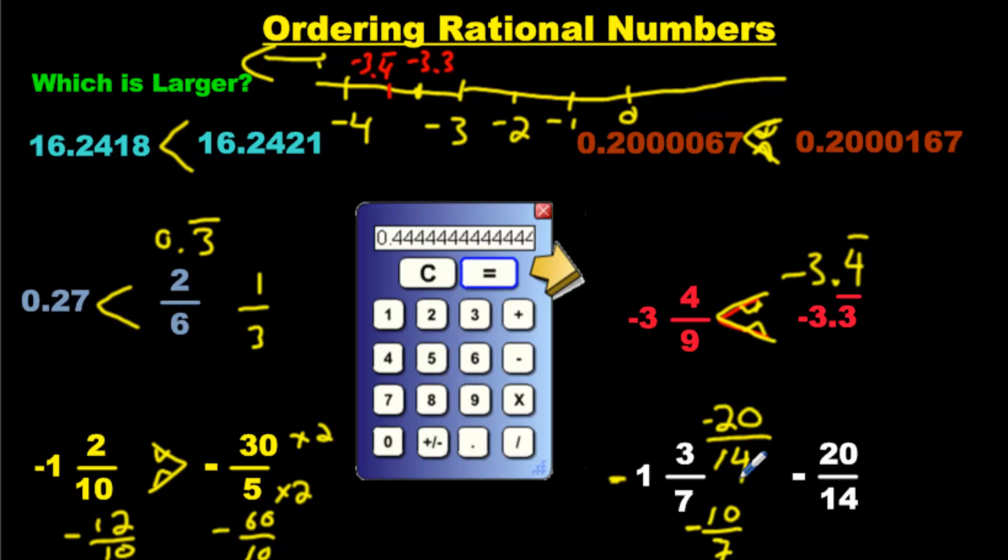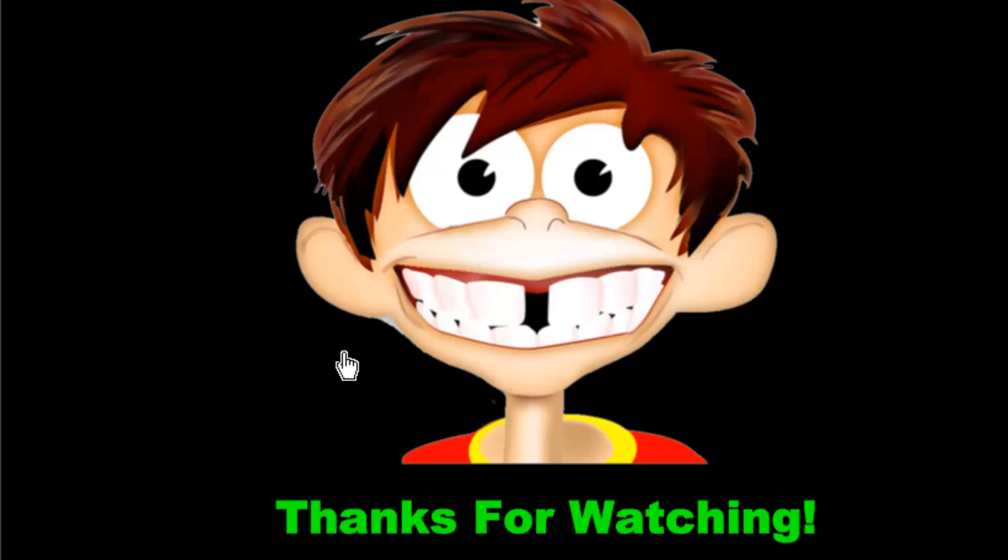Which one is bigger? Look at it. Do you see it? The denominators match. Look at the numerators. They're both negative 20. They're equal. We'll put an equal sign. We'll put an equal sign.